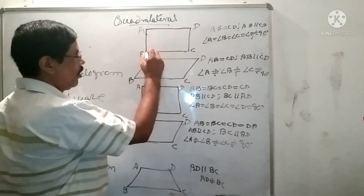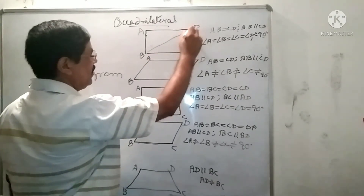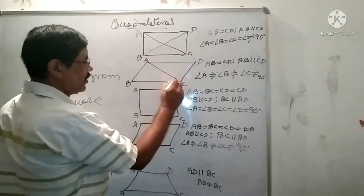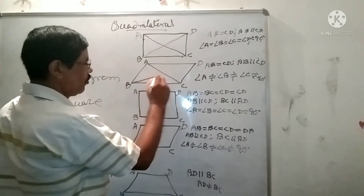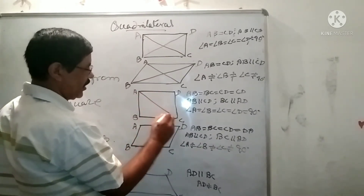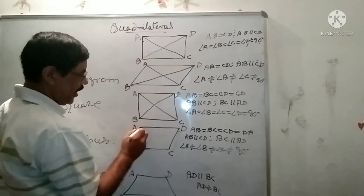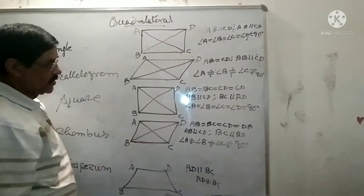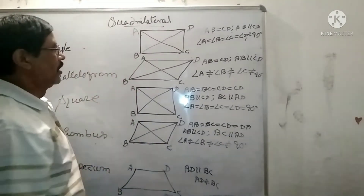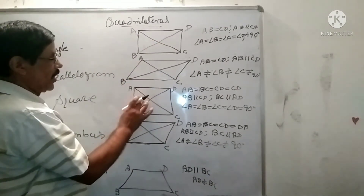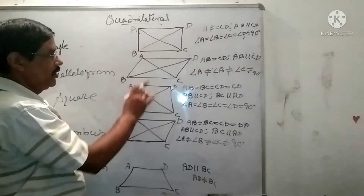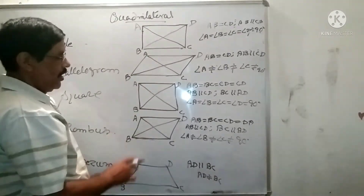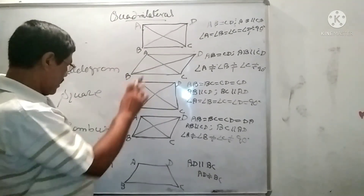When you join the opposite vertices of any quadrilateral, that line segment is known as the diagonal. In a quadrilateral there are two diagonals. In case of rectangle and square, their diagonals are equal.